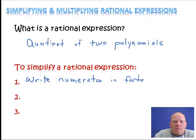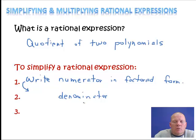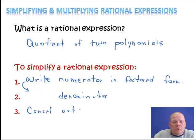The second step is to do the same thing with our denominator — write it in factored form. So we're going to have factors in the numerator and factors in the denominator. The last step is to cancel out common factors between the numerator and the denominator.